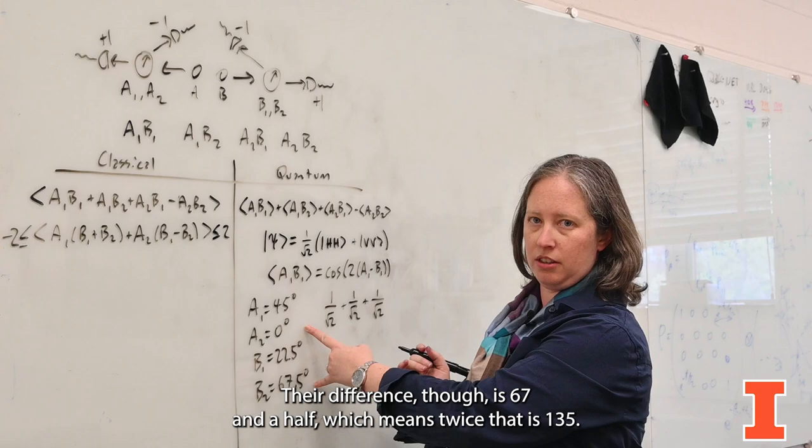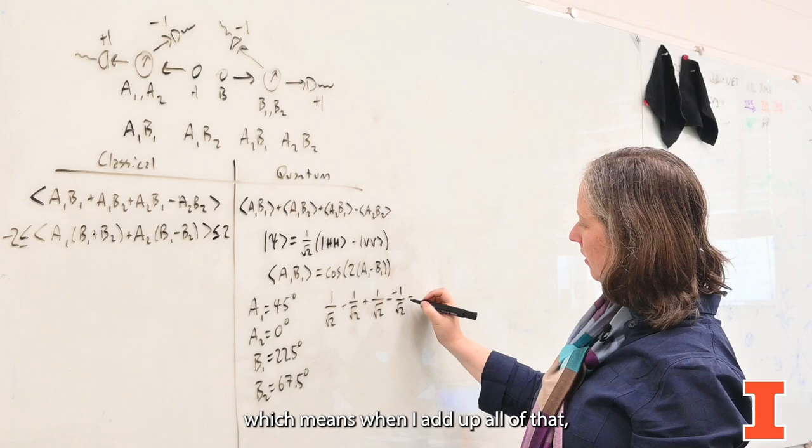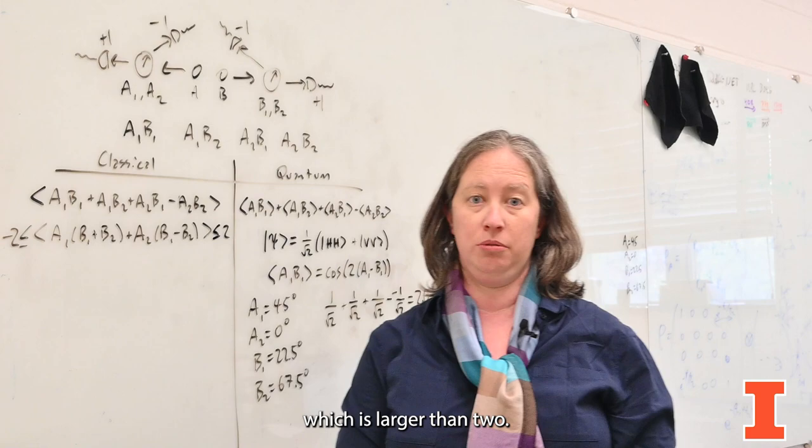A2 and B2, their difference though is 67 and a half, which means twice that is 135. The cosine of 135 is negative one over root two, but I already have a minus sign out front, which means when I add up all that, I get two times the square root of two,